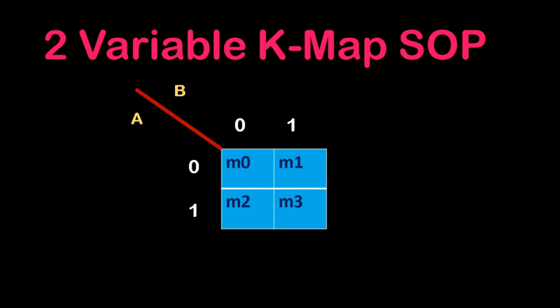So 2 variable K map in SOP. In sum of product we have to fill it by the small m, which is the minterm. M0, M1, M2 and M3 are the 4 boxes. So this is K map design. And A and B are the 2 input variables. 0 and 1 are written at the top, and 0 and 1 are written in the vertical position also. The first box is M0, second box is M1, third box is M2, fourth box is M3.